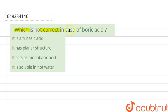The question is: which is NOT correct in case of boric acid? The options are: it is a tri-basic acid, it has a planar structure, it acts as a mono basic acid, and it is soluble in hot water.